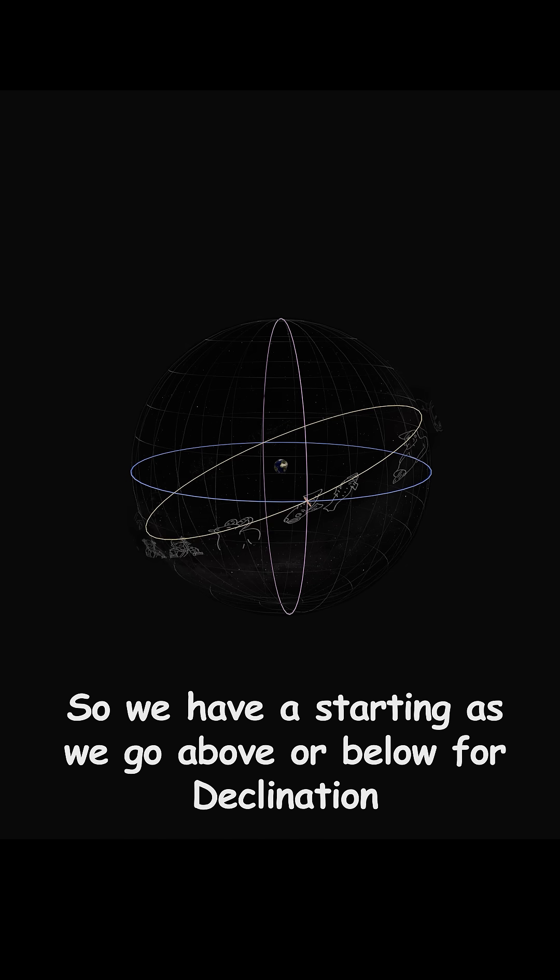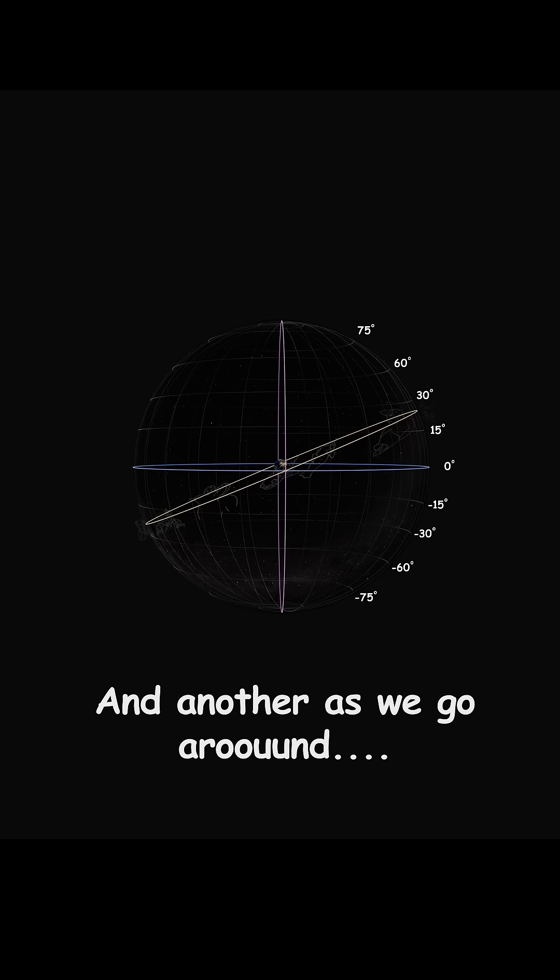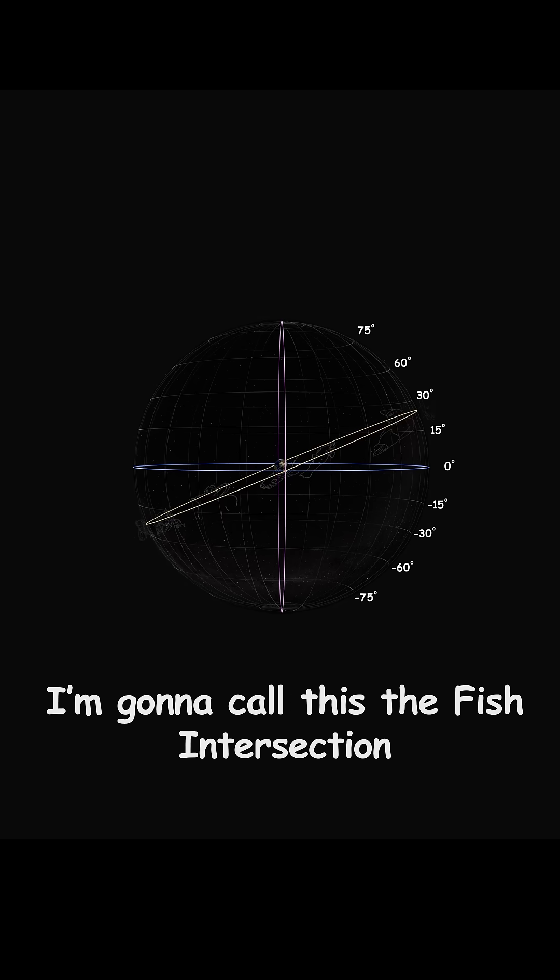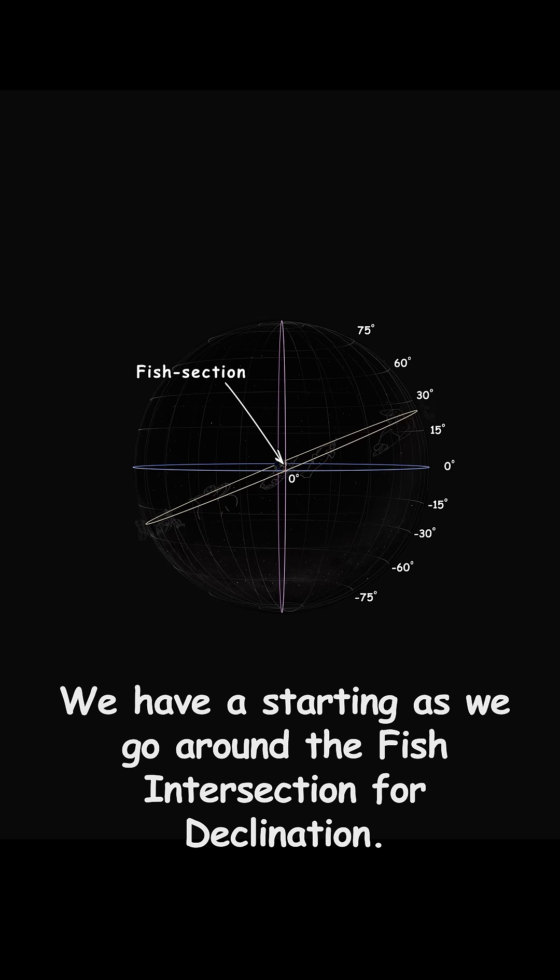So we have a starting as we go above or below the equator for declination, and another as we go around the...I'm going to call this the fish intersection as we go around the fish intersection.